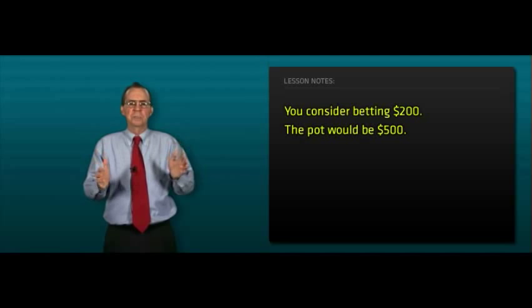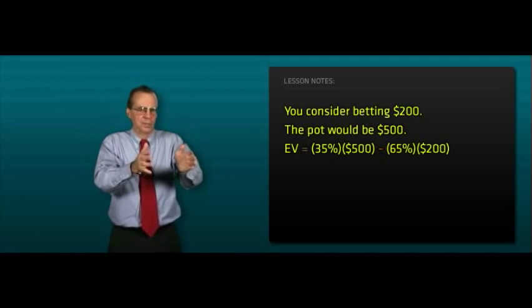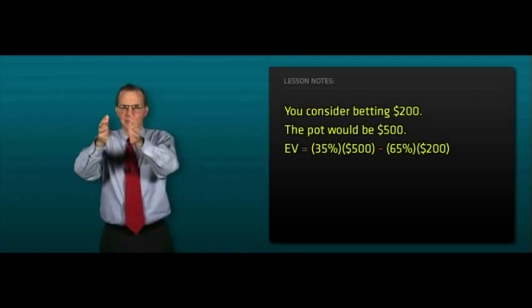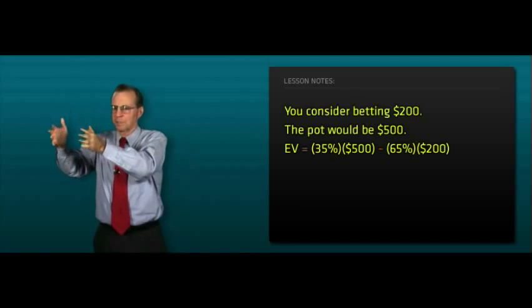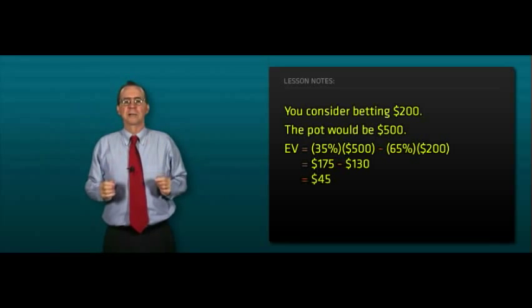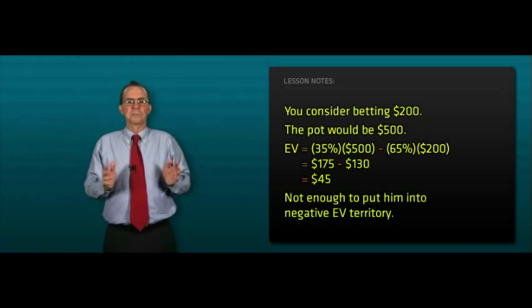His expected value would be 35% times the $500 minus 65% times the $200, $175 minus $130, $45. That's not enough to put him in the negative expected value territory.